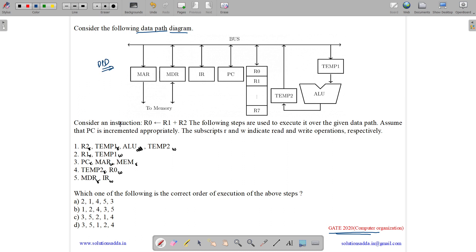Now it is saying, consider an instruction R0 = R1 plus R2. The following steps are used to execute it over the given data path. Assume that PC is incremented appropriately. The subscripts R and W indicate read and write operations respectively.